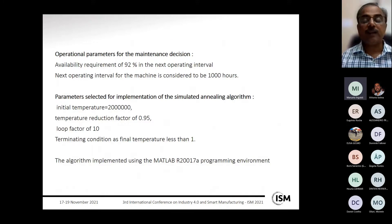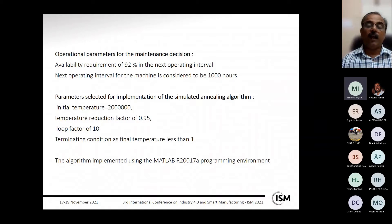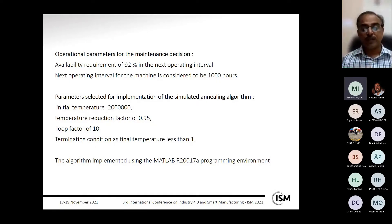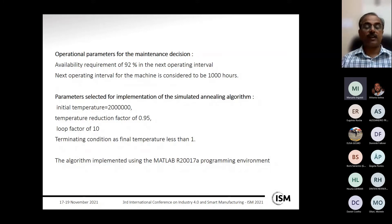The operational parameters for the maintenance decision demonstration: the availability requirement is set at 92% for the next operating interval, and the next operating interval is 1000 hours. These are user inputs, and based on them along with the maintenance manager's requirements, the algorithm produces the maintenance decision.